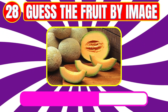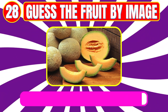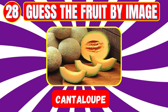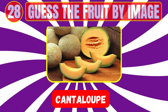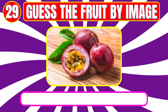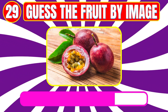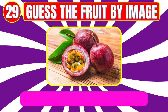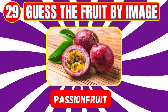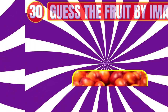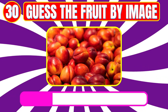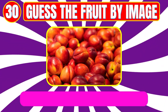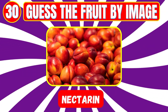Level number twenty-eight. Guess the fruit by image. Fruit name is cantaloupe. Level number twenty-nine. Guess the fruit by image. Fruit name is passion fruit. Level number thirty. Guess the fruit by image. Fruit name is nectarine.